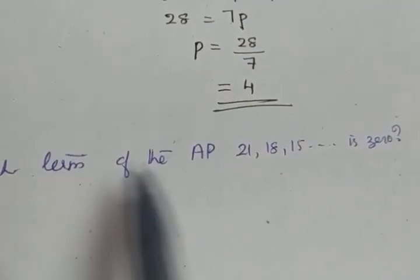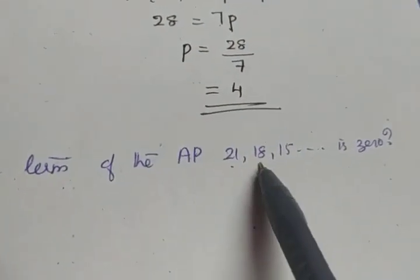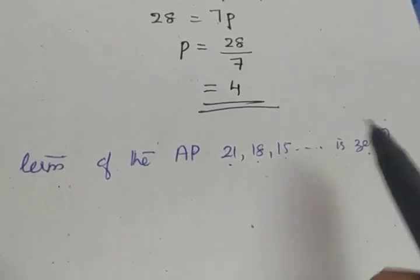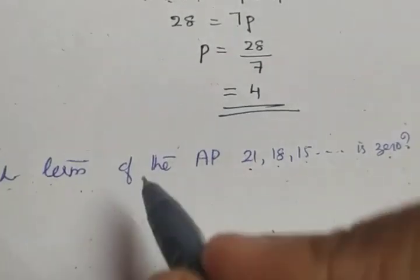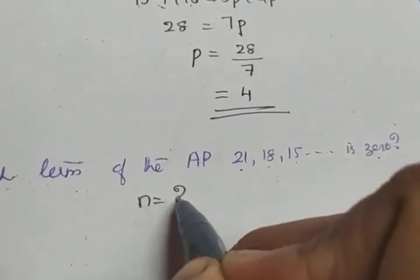The next question is which term of the AP 21, 18, 15 is 0? Question: which term? Which term means we have to find the value of n.